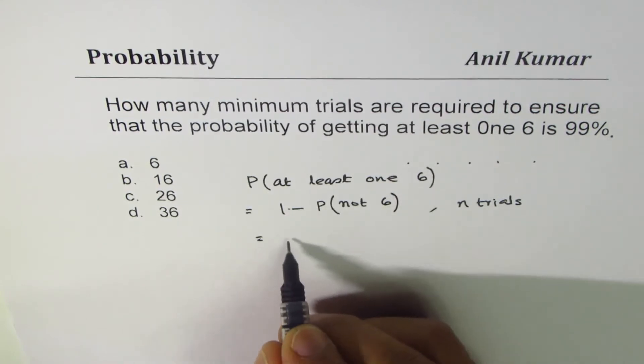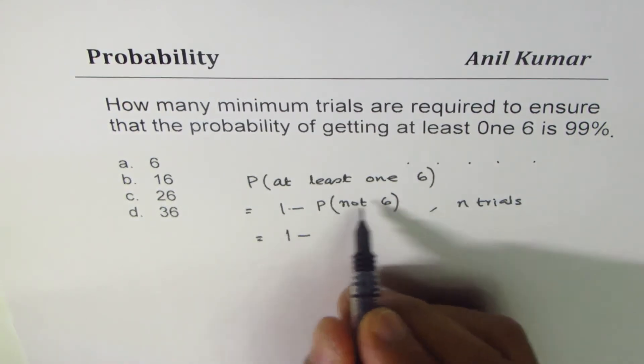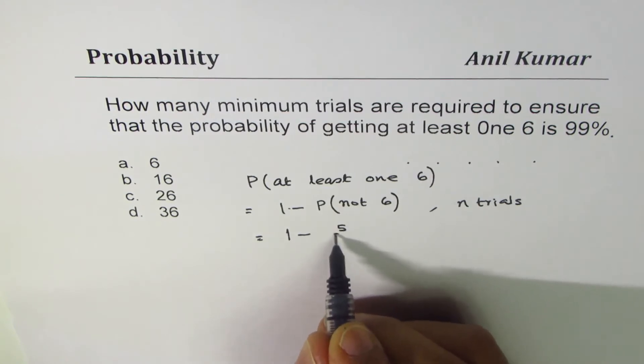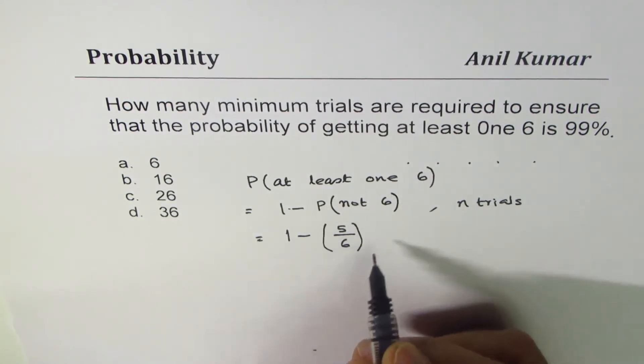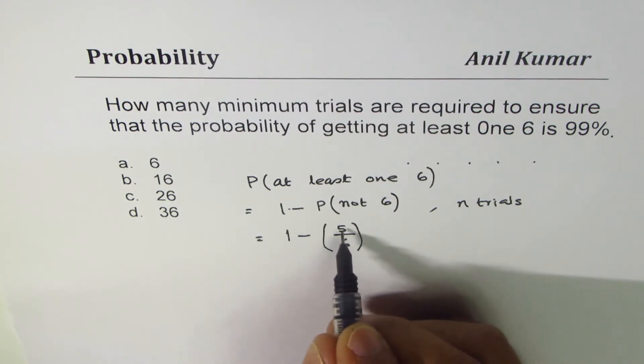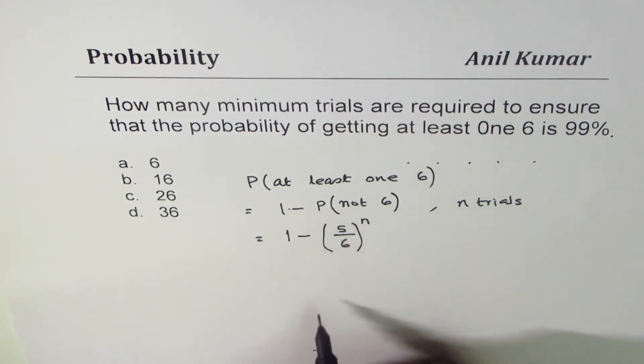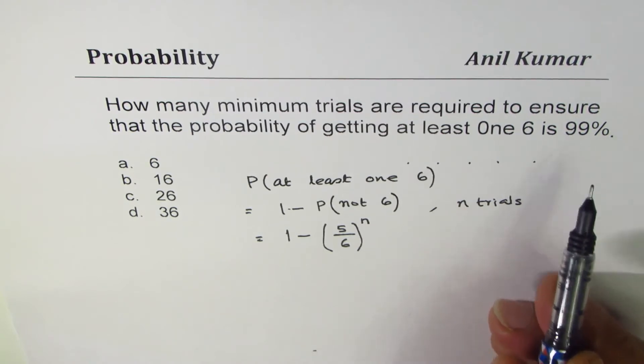So for n trials we could write this as 1 minus—there are five other numbers or a six—and as the trials are n trials, it'll be 1 minus (5/6) to the power of n.